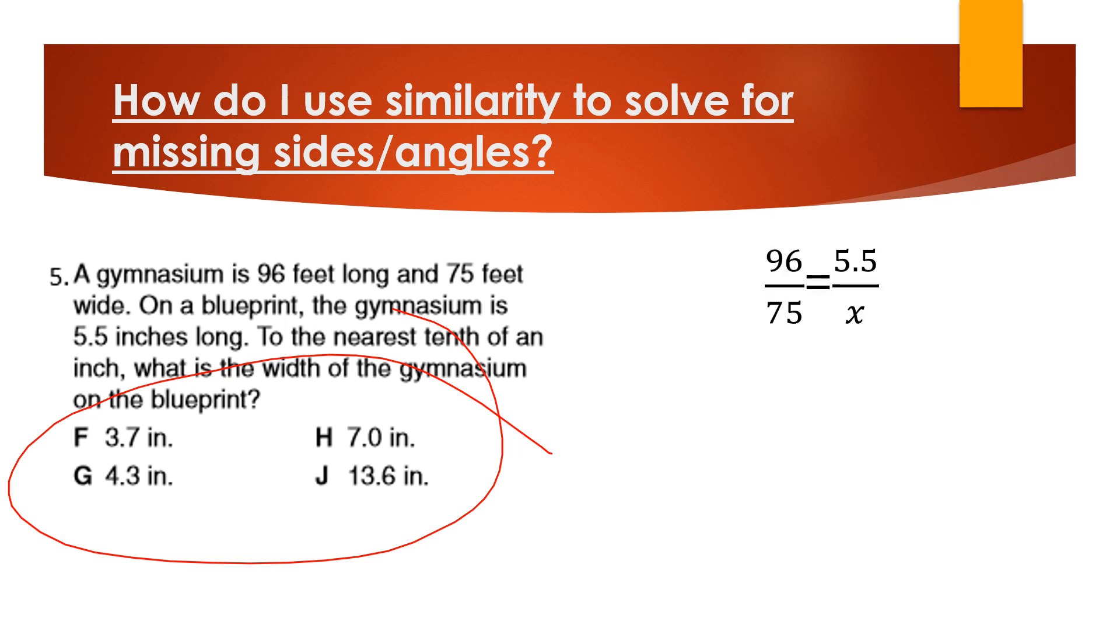But the units will take care of themselves. So 96 feet long to 75 feet wide, 5 and a half inches long, so that goes on the top of my fraction, over x, cross multiply and solve. And then 4.29 will round to 4.3, so that's why I know that that is my final answer.